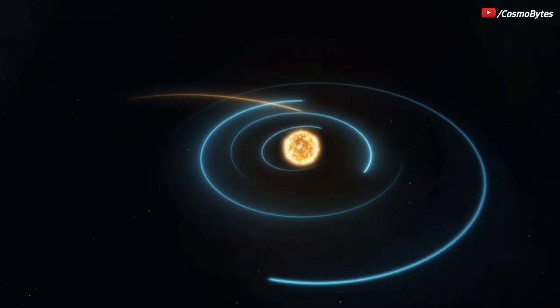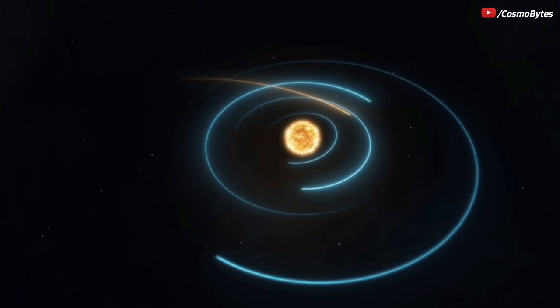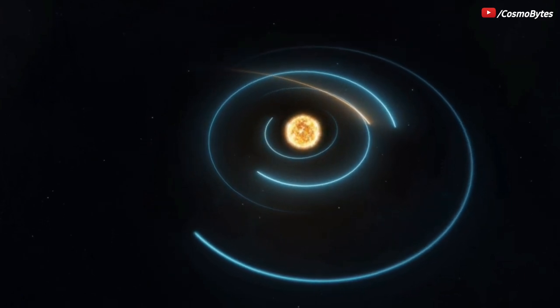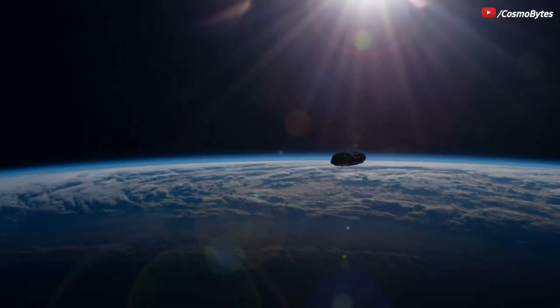Over millions of years, its orbit was changed primarily by the gravitational influence of large planets like Jupiter so that it now orbits the Sun closer to Earth. As a result, Apophis is classified as a near-Earth asteroid, as opposed to a main-belt asteroid.